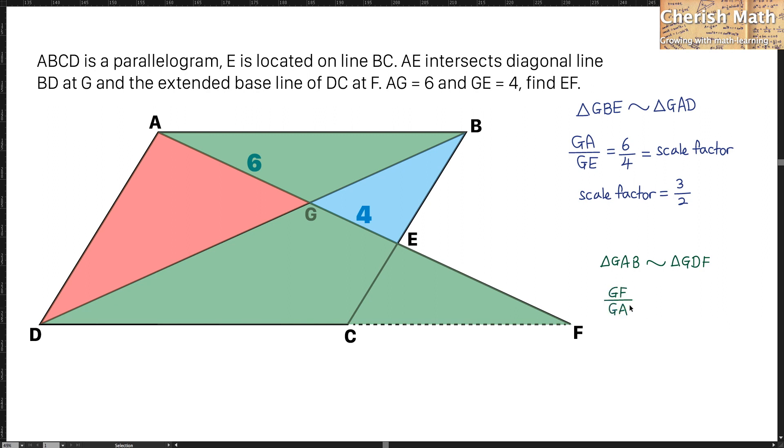And when I use the line of GF divided by the line of GA, that is going to be 4 plus EF divided by 6. And this value is exactly the same scale factor that we got earlier here. And I can equate it directly.